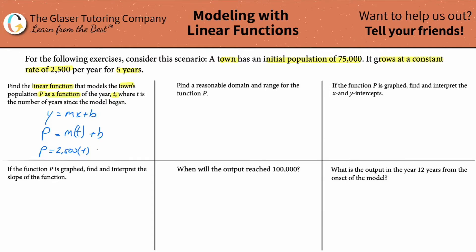The y-intercept always represents the starting value. The problem says 'an initial population' — that sounds like a start value. It starts at 75,000, so that's our y-intercept. So the linear model is p = 2,500t + 75,000. There's your linear model.